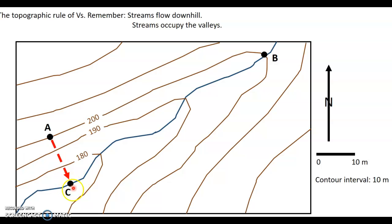So we're a little bit below 180 meters here. And at point B, we're at 200 meters. So the stream is dropping 10, 20, maybe 25 or 24 meters between points B and C. Topographic Vs point uphill.